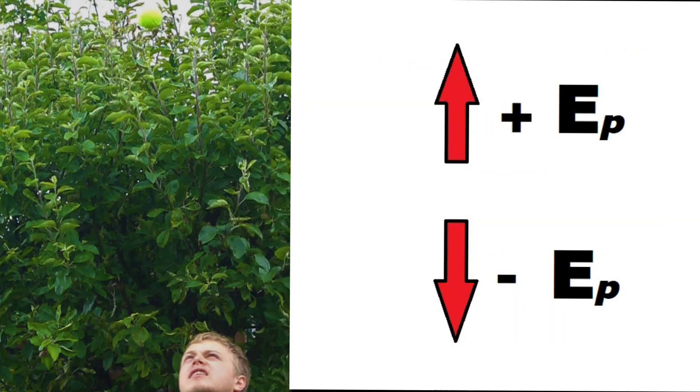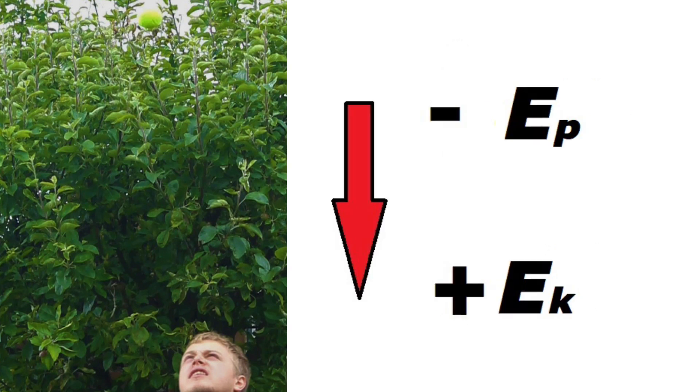As a result, the tennis ball's gravitational potential energy increases. However, when it's brought back down to the ground, its gravitational potential energy decreases.